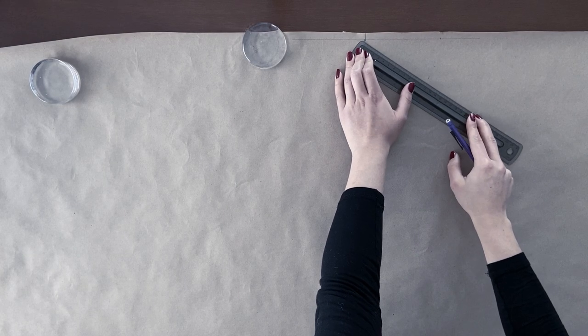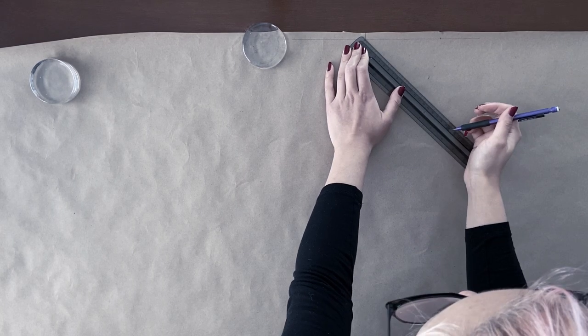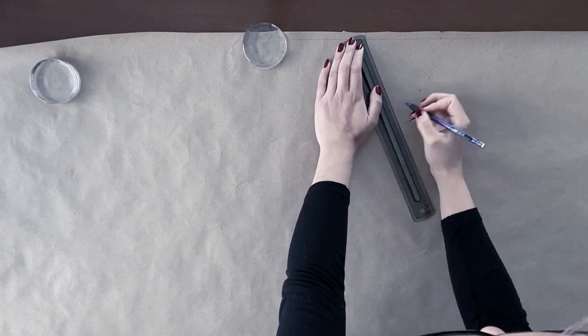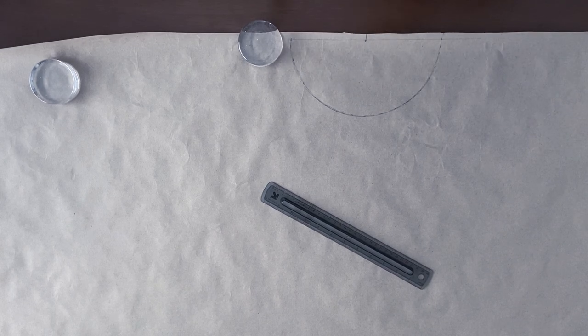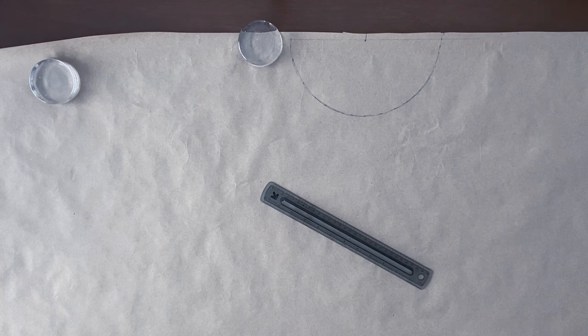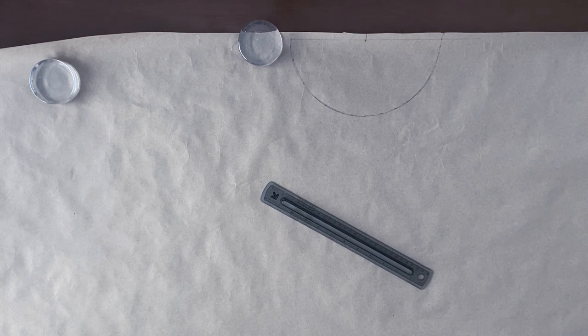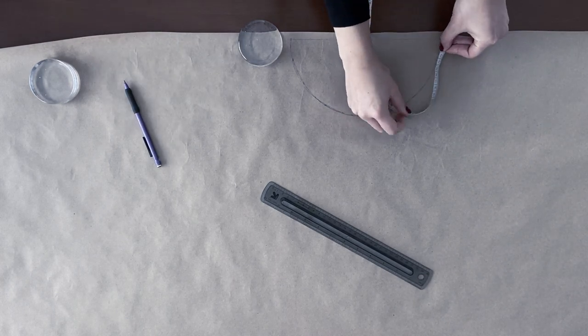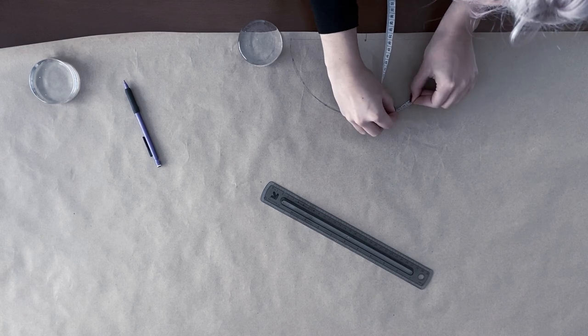To start drawing your pattern find the center of your pattern paper. From that center use a ruler or a measuring tape to find your waist radius and mark that down. Now rotate your measuring device and mark the length of the radius again. Do this until you have a perfect half circle.